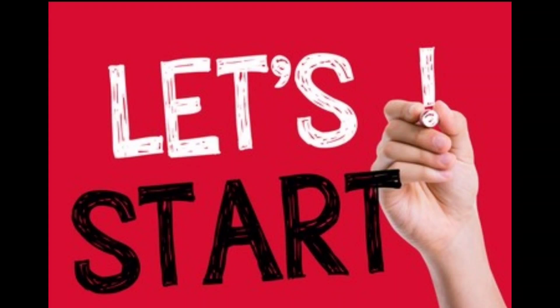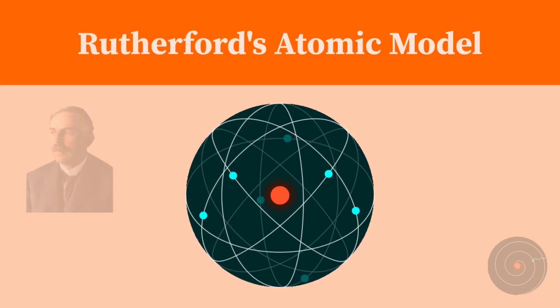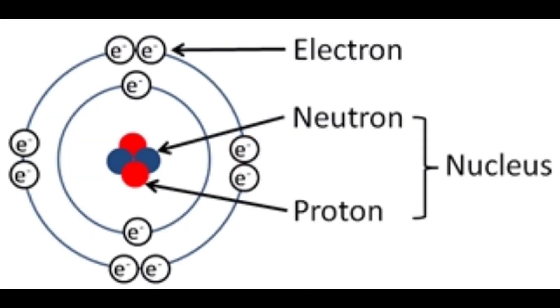Bohr model of the atom was proposed by Niels Bohr in 1915. It came into existence with the modification of Rutherford's model of an atom.